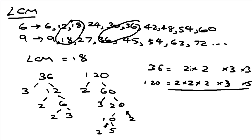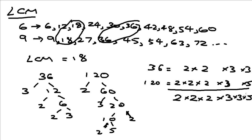So unlike how you find HCF — where you only multiply the numbers that are common — for LCM you list down all the numbers, and if they are common you just list one of them. So 2 and 2 is common, list one. Another 2 and 2 is common, list one. 3 and 3 is common, list one. The remaining 3 is alone, list it. And 5 is alone, list it. Then you multiply them all, and the LCM is 360.